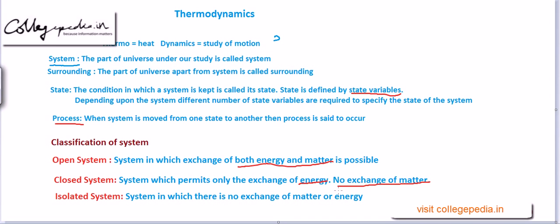We must get acquainted with these terms because they will be used over and over again as we proceed in the chapter. We must know what an open system is and what a closed system is. Then there is another kind — isolated system — and by the name it is very clear: the system exchanges neither matter nor energy with the surroundings.